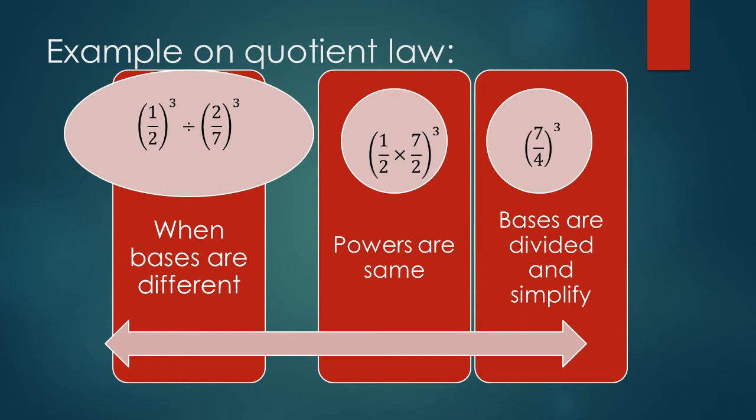1 upon 2 to the power 3 division 2 upon 7 to the power 3. We can change division into multiply. And after the division, term will be reciprocal. 1 upon 2 multiply 7 upon 2. And solve and simplify. We get 7 upon 4 to the power 3.